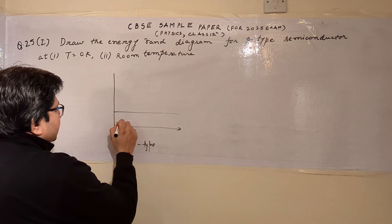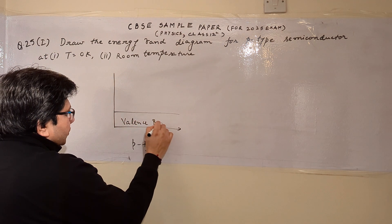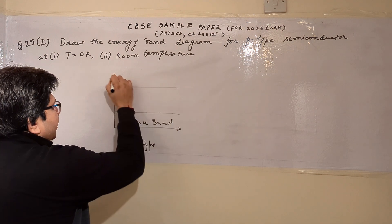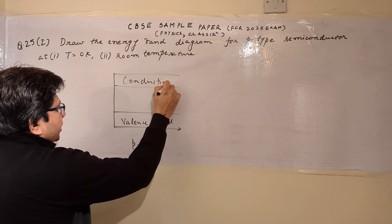We know that the lower band corresponds to the valence band, and the upper band corresponds to the conduction band.